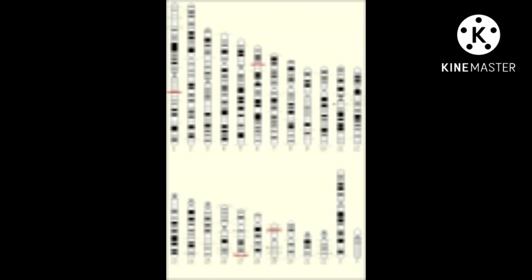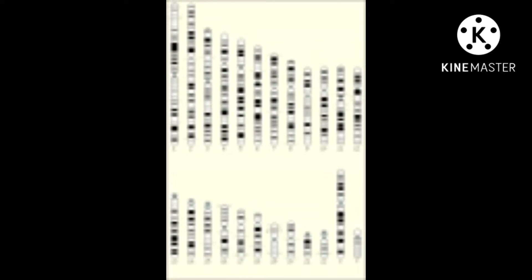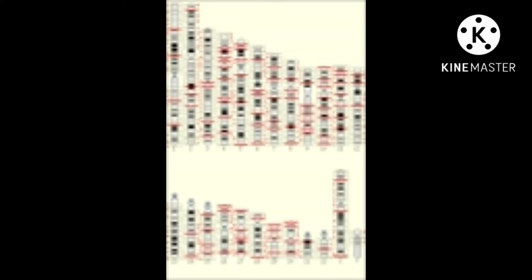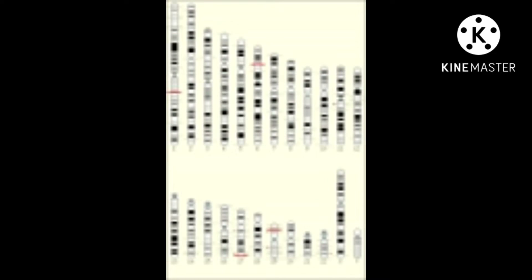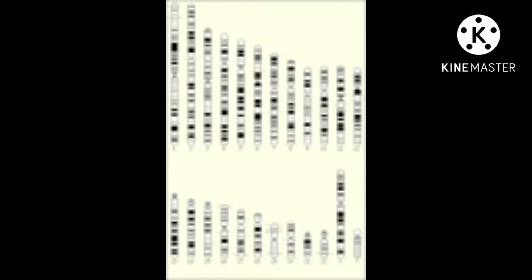I will tell you a shortcut for the chromosome nomenclature process. First, identify the gene and mention where it is present — in which chromosome it is present. Then identify the chromosome number and write it.